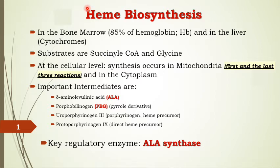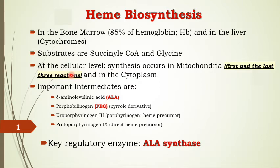Heme synthesis occurs in the bone marrow and also in the liver. At the cellular level, we have eight successive sequential biochemical reactions. Four of them occur in the mitochondria — the first reaction and the last three enzymatic reactions. The remaining four enzymatic reactions occur in the cytoplasm.